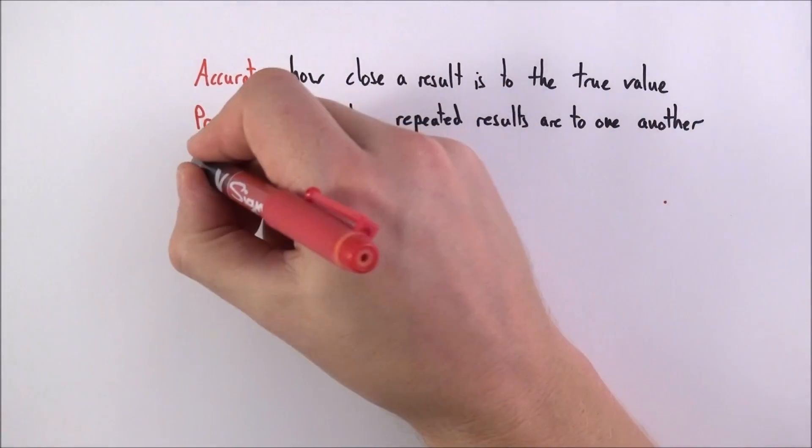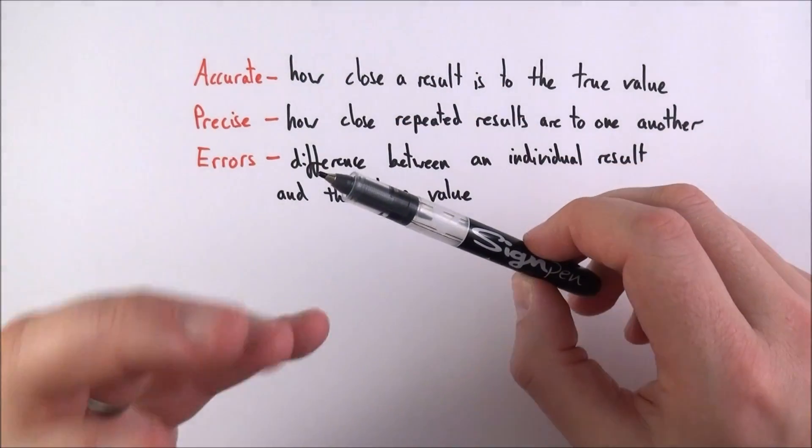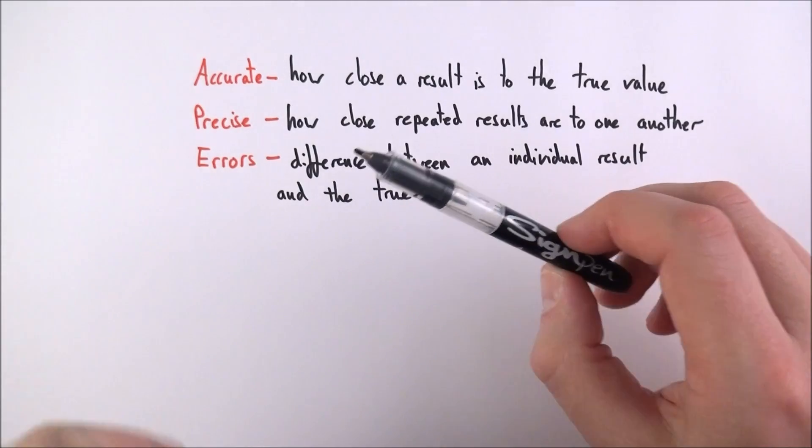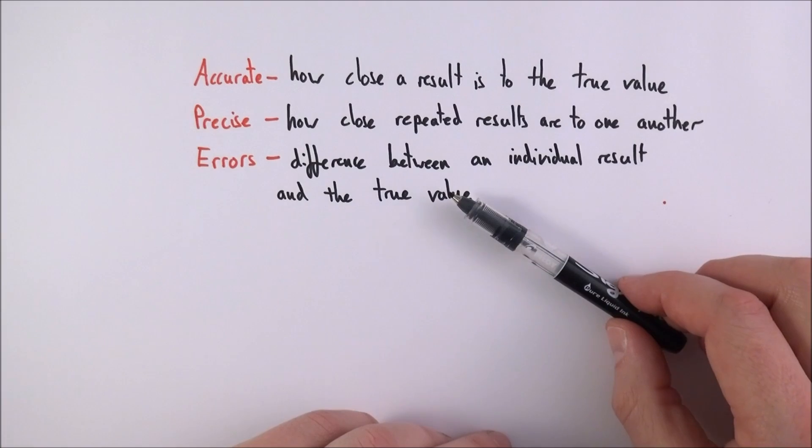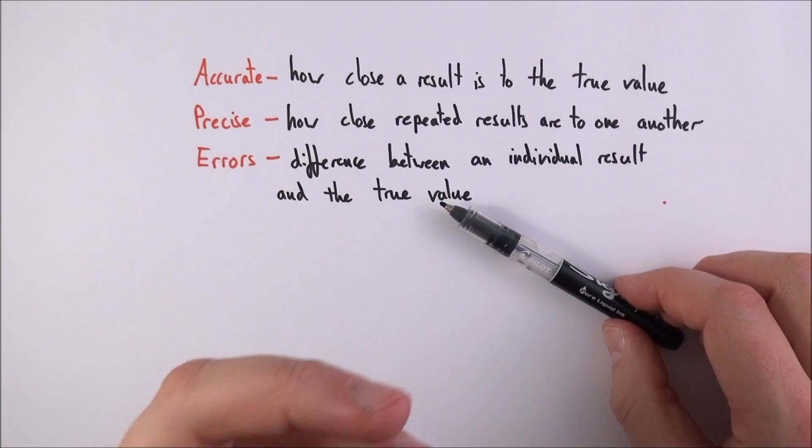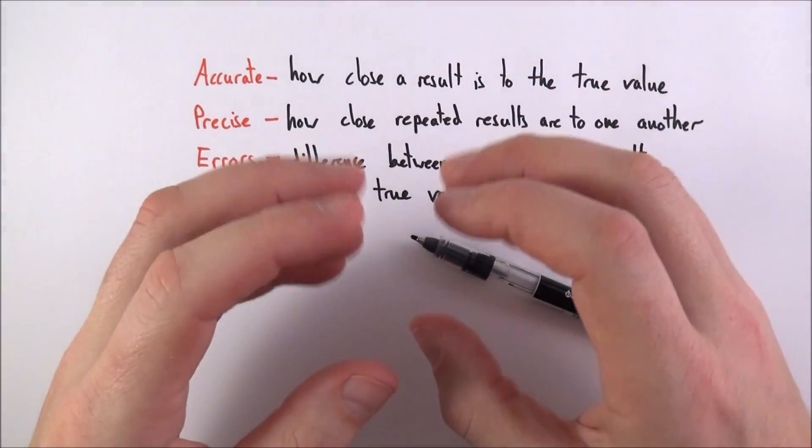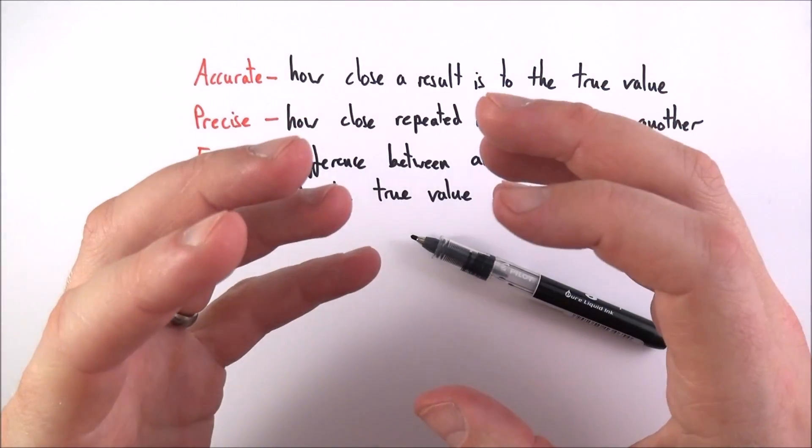There are a couple of other words that we need to think about. First of all, errors. Errors are inherent in any experimental procedure when you have to measure something, and it's really the difference between an individual result and the true value. This is something that we try to minimize, perhaps by thinking about the way we set up our experiment and the measuring instruments that we use.